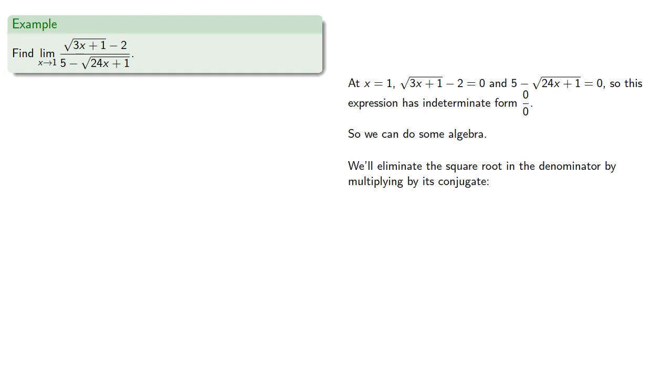We'll eliminate the square root in the denominator by multiplying by its conjugate. So again, those will have the same terms, but since the expression is subtracted, we'll add them.